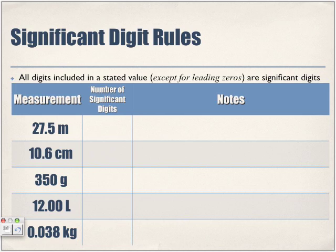For example, 27.5 meters — what is the number of significant digits? Three. The note is that all non-zero digits are considered significant. Any number from 1 through 9 is significant — so the 2, 7, and 5 are all significant.